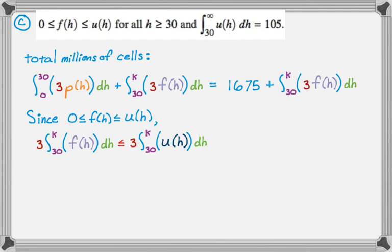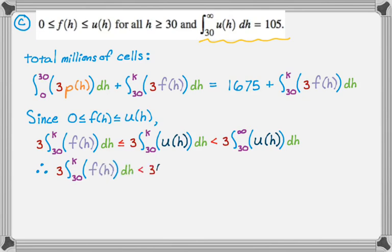And then since U of H is positive, the integral from 30 to K, K is finite, must be less than or equal to the integral from 30 to infinity. So this thing is definitely less than three times the integral from 30 to infinity of U of H dH. So a lot of inequalities here, but the integral from 30 to infinity is just 105. So we can say that the first thing we wrote in our inequality, three from 30 to K of F of H dH, if you need to, you can pause and read through it again, that first part must be less than three times 105, which is that absolute right bound of our inequality, which is 315.